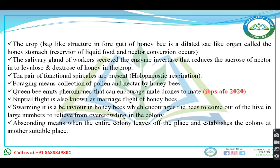There are two important terms: swarming and absconding. Swarming is when there is overcrowding in the hive — a large number of bees leave the hive to give relief from overcrowding in the colony. Absconding means when the entire colony leaves the place and establishes a new colony at a new location.